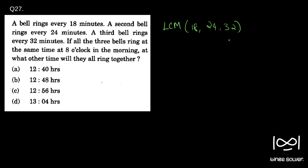So here you can see: 32 is 8 into 4, which is all 2's, so the entire 32 will be there in the LCM. And 24 is 6 into 4, so there is one additional 3. And 18 is 9 into 2, so there is 9 additional. So 32 into 9 is the LCM.